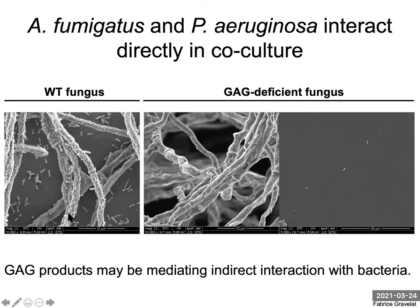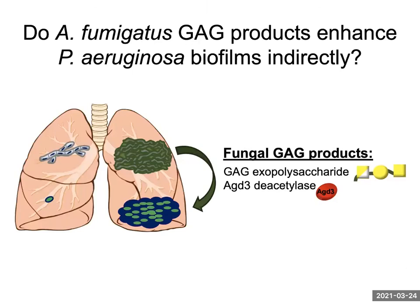We took a closer look with scanning electron microscopy and observed, consistent with our confocal imaging, that the bacteria were adhering to the fungal hyphae that were covered in GAG decorations. In contrast, very few bacteria were observed adhering to the fungal hyphae that had none of these GAG decorations. Interestingly, we also observed that bacteria were adhering to cover slips from the wild-type fungus in a GAG-dependent manner, suggesting that GAG products could be mediating indirect interactions between these two organisms, as very few bacteria were observed on cover slips from the GAG-deficient fungus.